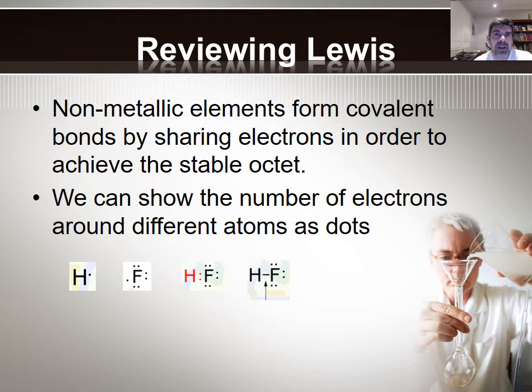Lewis structures are ways of drawing or representing the electron configuration around different atoms as they bond, particularly as they bond in a covalent kind of a way. We have looked at Lewis structures for both ionic and covalent substances, but we're going to be focusing, particularly because we're setting this in the context of water, with a look specifically at Lewis structures as they relate to covalent compounds.